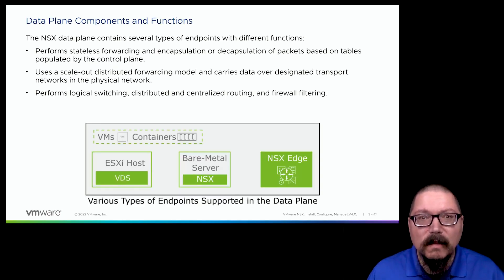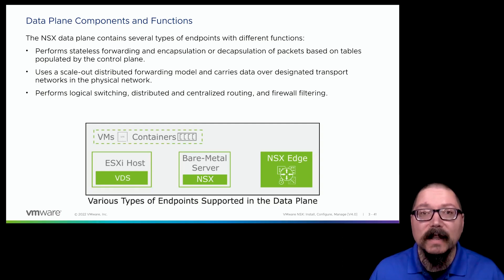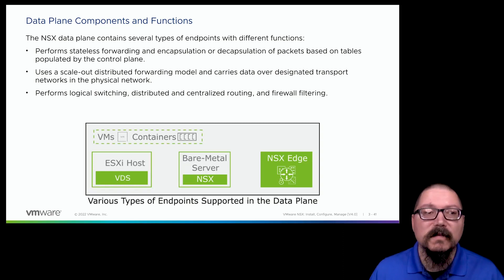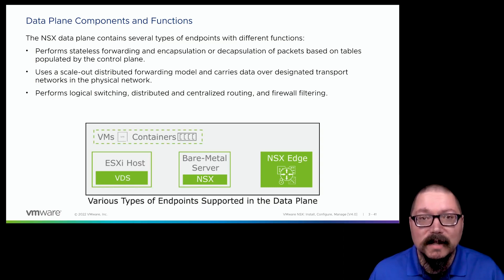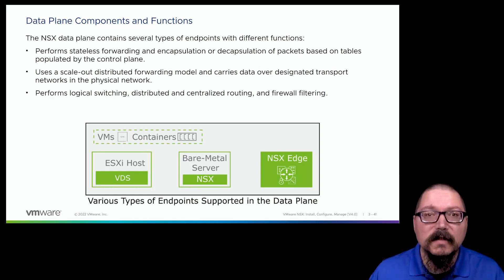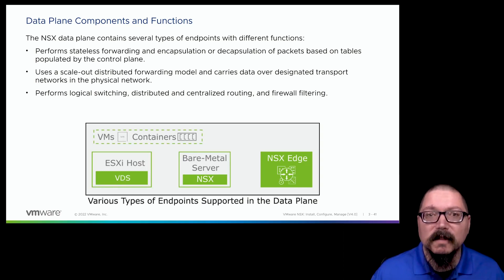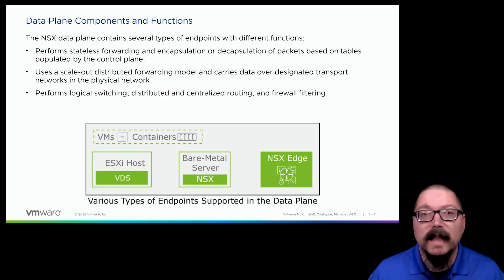When we think about preparing the data plane, what are we preparing? We're preparing the ESXi hosts, bare metal servers, and edge nodes. This provides us our distributed scale-out forwarding engine, where individual virtual machines are able to use resources local to them, meaning that as I add more hosts, I add more capacity.